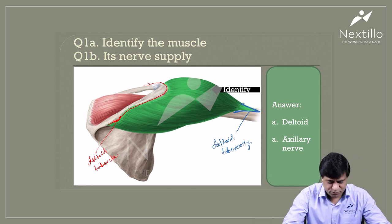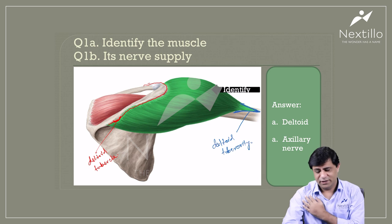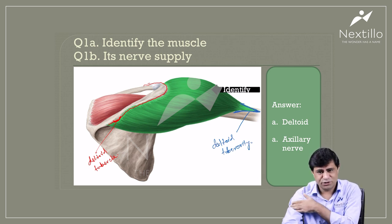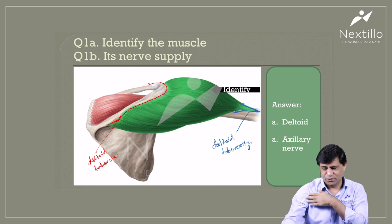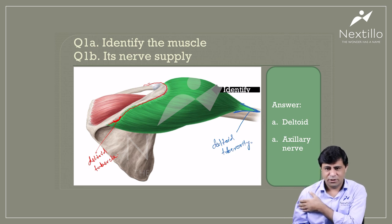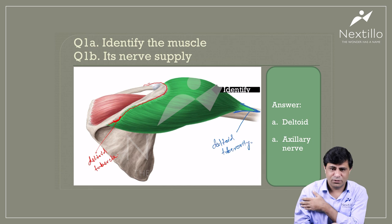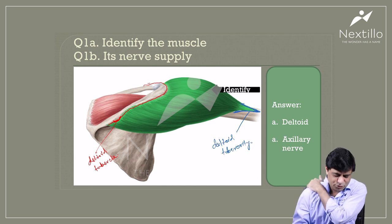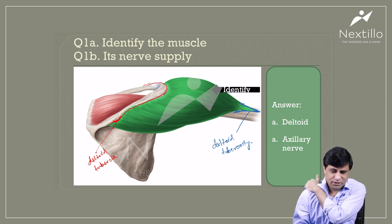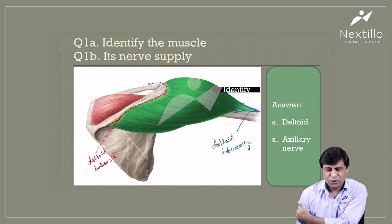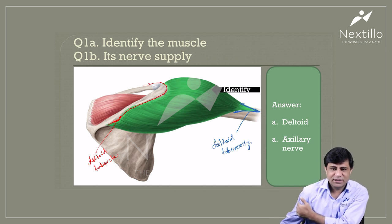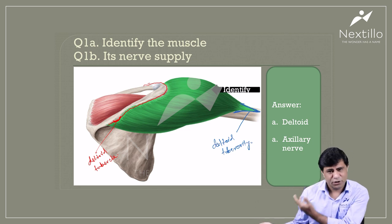Now about the different types of fibers. There is the clavicular head, which reaches down and directly crosses the shoulder joint, so it will flex the shoulder joint as well as medially rotate. The posterior fibers coming from the lower edge of the spine of scapula insert here and cause extension at the shoulder as well as lateral rotation of the humerus.